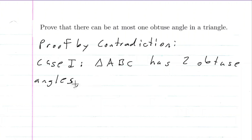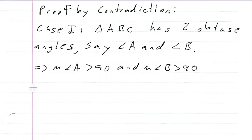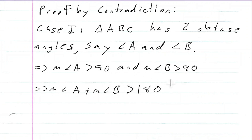Say angle A and angle B are the obtuse angles. This implies that the measure of angle A is bigger than 90 and the measure of angle B is bigger than 90. This implies that the measure of angle A plus the measure of angle B is bigger than 180, because if A is bigger than 90 and B is bigger than 90, their sum is bigger than 180.